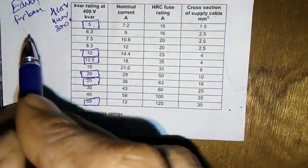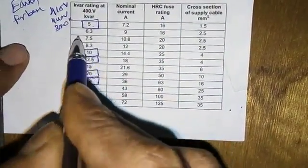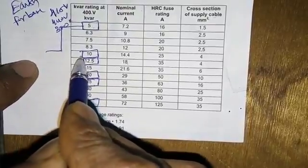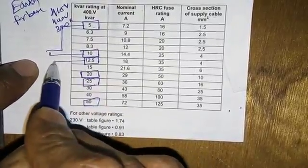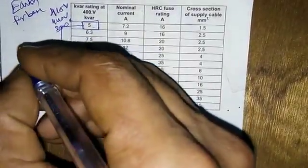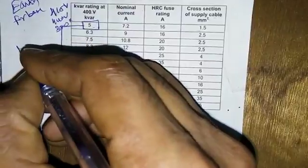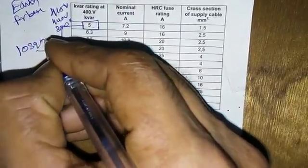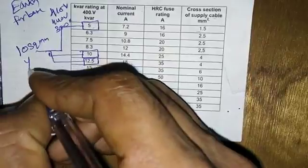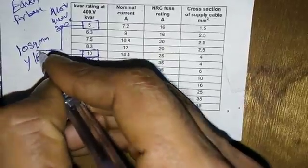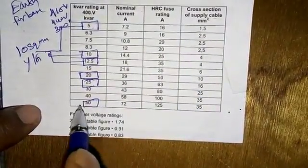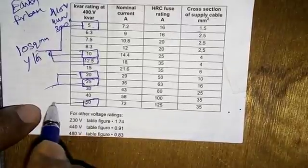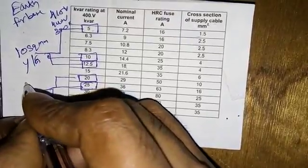That is the first configuration. This is 5kV, 10kV, 12.5kV. If you compare it to 10 square, you can see 10 square, so that we can get 10 square meters and we can get 16 square meters.